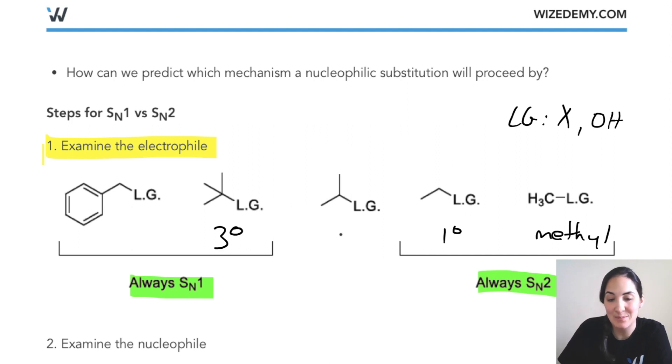The problem comes when we have a secondary alkyl halide. If we have a secondary alkyl halide, that's when we can either go SN1 or SN2. Sometimes you actually have both happening.